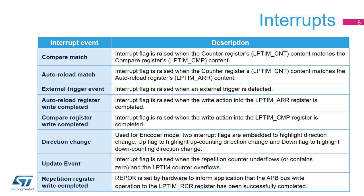These three interrupts are useful in mitigating the overhead of polling on the status of writing to these registers when the peripheral core clock is too slow compared to the APB interface clock. The up and down direction change interrupts are raised when the encoder mode function is enabled and the counting direction changes from up to down or vice versa. The counting direction of the low-power timer's counter reflects the rotation direction of the quadrature sensor. The update event is raised when the repetition counter underflows and the LP-TIM counter overflows.